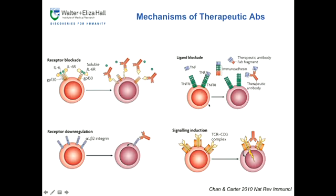So how do therapeutic antibodies work? They can work through a whole host of different mechanisms. A simple receptor blockade uses the antibody to block a receptor you want to interfere with. You can also target the antibody against the ligand itself, so the ligand can't interact with the receptor. Antibodies can also change signaling within a cell — inducing or decreasing signaling, or causing receptor internalization. Most therapeutic antibodies work through the top two: binding to a ligand like a cytokine or chemokine, or binding to its cognate receptor.